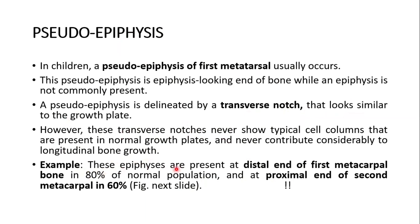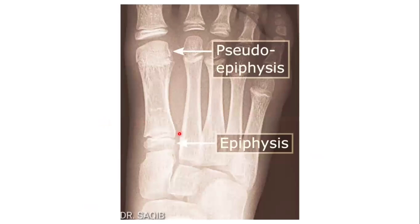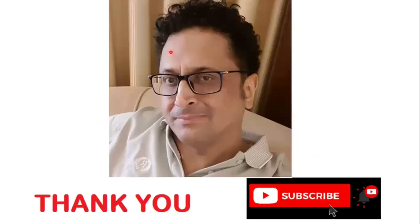These epiphyses are present at the distal end of the first metacarpal bone in 80% of the normal population, and at the proximal end of the second metacarpal in 60%. This is the foot, and this is the first metatarsal — this is the pseudo-epiphysis. Thank you very much. Stay tuned for more general anatomy and have a great time. Good day.